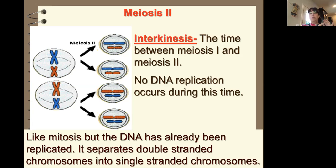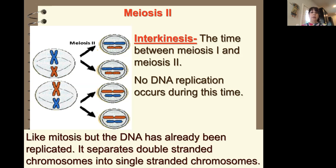We've gone through prophase, metaphase, anaphase, telophase, and cytokinesis, so we split into two cells. The next stage you'd think would start with interphase again, but in animals we don't — we call it interkinesis, which is just the space between telophase and cytokinesis until we get to prophase two. There's no reason to duplicate DNA, which is what happens in the S phase of interphase, and if we did that we'd have a bunch of problems.